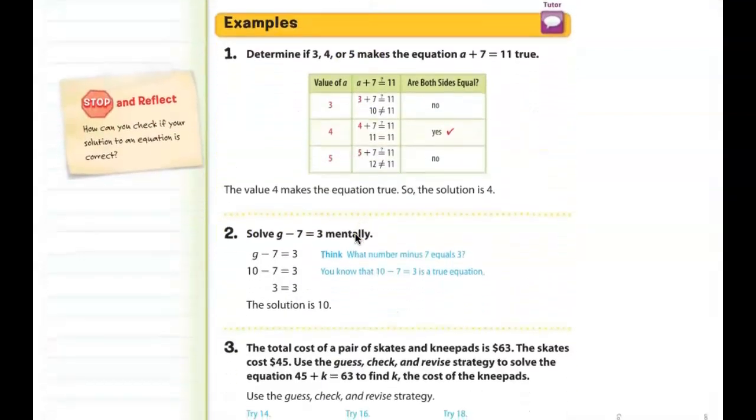So the only thing that you could put in that situation to make that true is 2 plus 7 equals 9. And so X is equal to 7. So you've just solved that equation by figuring out that X is equal to 7. So they show you another example. It says, determine if 3, 4, 5 makes the equation A plus 7 equals 11 true. So what they've done here is they've just plugged in each of these numbers to see which one actually is correct.